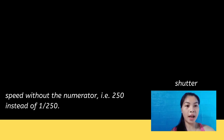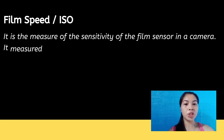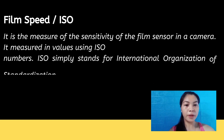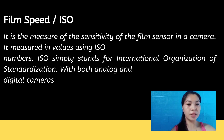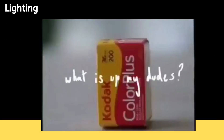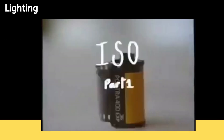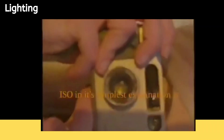Film speed, or ISO, is a measure of the sensitivity of the film sensor in the camera, measured using ISO numbers — standards set by the International Organization of Standards. In its simplest explanation, ISO is the film's sensitivity to light. It can be referred to as the rating or the speed. The lower the speed, the more light you'll need for your shot; the higher the speed, the lower the light conditions you can shoot in.